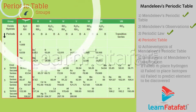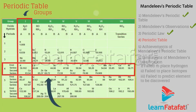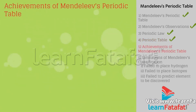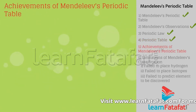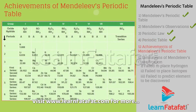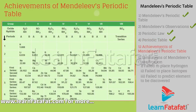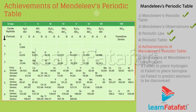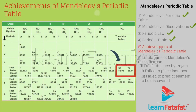Vertical columns are called groups and horizontal rows are called periods. Achievements of Mendeleev's periodic table: in order to group some elements, Mendeleev considered similarity in properties instead of atomic masses. Hence, some elements with slightly higher atomic mass were placed before elements with slightly lower atomic mass. For example, cobalt is placed before nickel.